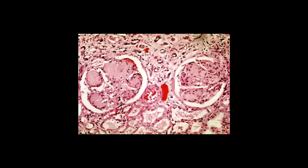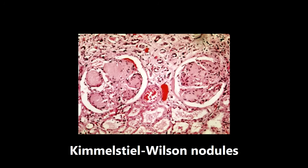This next picture is an example of Kimmelstiel-Wilson nodules, a sign of nodular glomerulosclerosis usually caused by diabetic nephropathy. Within the glomerulus you see sclerotic nodules — you can't make out any cell nuclei. There's really no other glomerular pathology that looks like this. A lumpy, separated-looking glomerulus means Kimmelstiel-Wilson nodules and diabetic nephropathy.